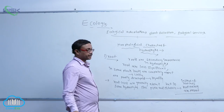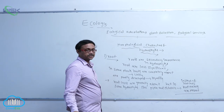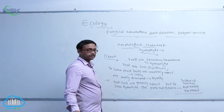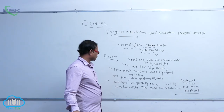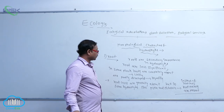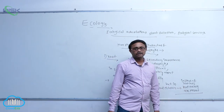To summarize: roots are of secondary importance in hydrophytes and are less significant. In some plants like Wolfia, roots are completely absent. In Hydrilla, roots are poorly developed. Root caps are generally absent, but in some hydrophytes like Pistia and Icarnea, instead of root caps, root pockets are present.